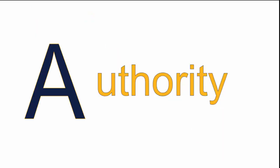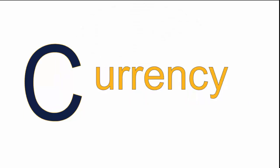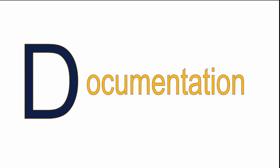A is for Authority — does the author have credentials related to the topic? B is for Balance or Bias, so look carefully at the people or organizations responsible for a website. Are they selling something? Is there mention of sponsorships? C is for Currency — when was this information created or updated? If you cannot find this information, that's a red flag. And lastly, D is for Documentation — which information sources were used in creating this resource? Are there suggestions for more reading or support for their claims?